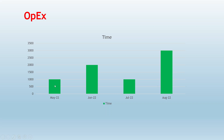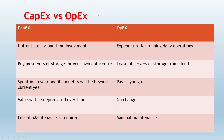With operational expenditure there is no upfront cost, no one-time investment required. Small organizations moving to the cloud can go for operational expenditure. To summarize: CapEx means upfront cost or one-time investment; operational expenditure is the cost that varies with usage of the servers, covering daily operations and maintenance. Buying servers or storage for your own data center falls under capital expenditure.